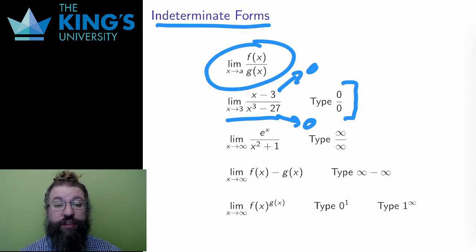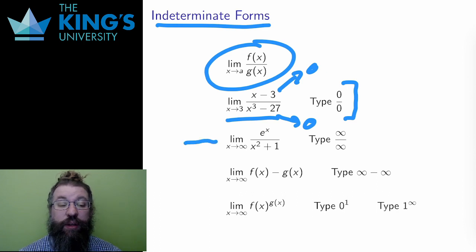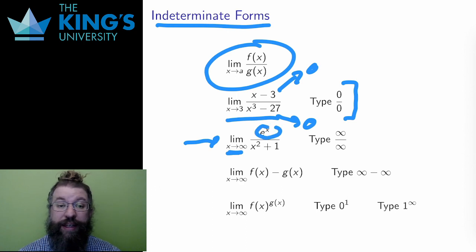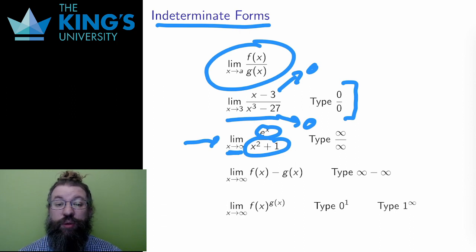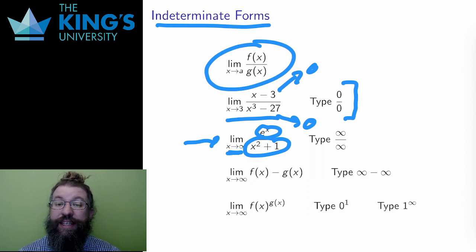This week introduces some new indeterminate forms. Consider a limit as x approaches infinity. The numerator, e to the x, is a growing function getting larger and larger, so as x approaches infinity, e to the x also approaches infinity. The denominator, x squared plus 1, is the same — as x approaches infinity, x squared plus 1 also approaches infinity, getting larger and larger without bound. This is an indeterminate form of type infinity over infinity.